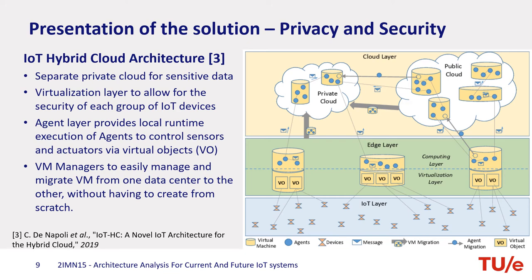One of the solutions for IoT data privacy and security is a hybrid IoT cloud architecture approach. Here we divide the cloud into two parts: the public cloud and the private cloud. The public cloud is used for data storage and big data analysis, whereas the private cloud is used for more sensitive information about the users. This is possible using a three-layered approach where the edge layer is further divided into two layers: the agent server and the virtualization layer. The virtualization layer is responsible for securely abstracting each IoT device and providing virtual objects, which the agent service uses to provide real-time data processing and to route data where required.